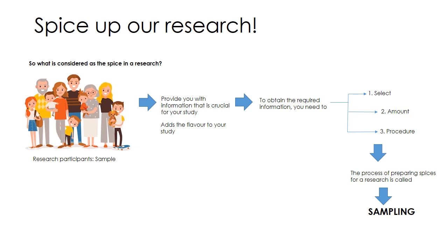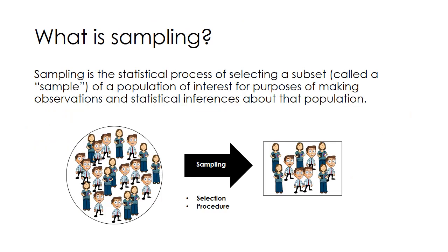How is this related to research? In research, the spice is actually our sample — the participants — because they provide the crucial information for your study. They are essentially flavoring your study, bringing the taste and the aroma to it. In order to obtain the proper flavor — the crucial information — you need to select your participants correctly, with the right number and the proper procedure. This process of preparing spices in research is called sampling.